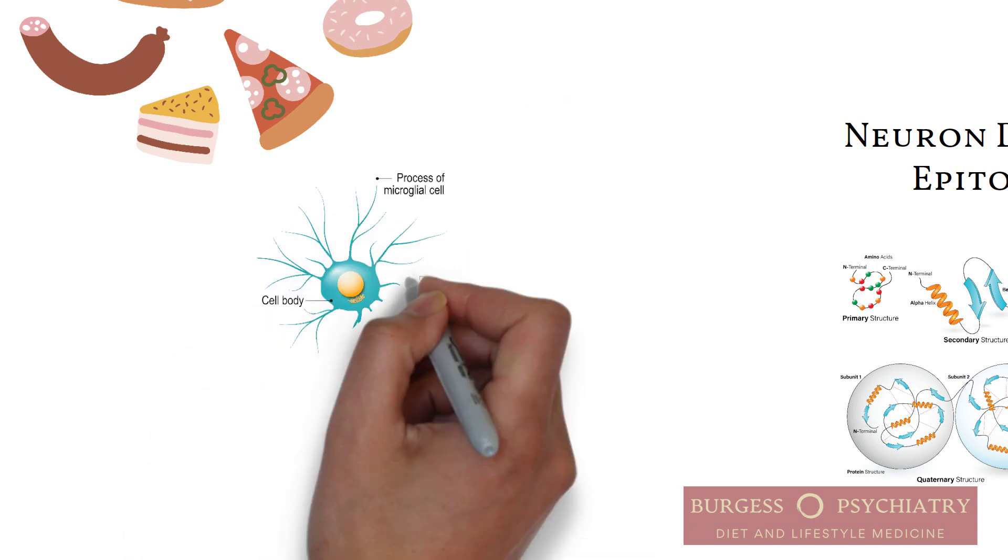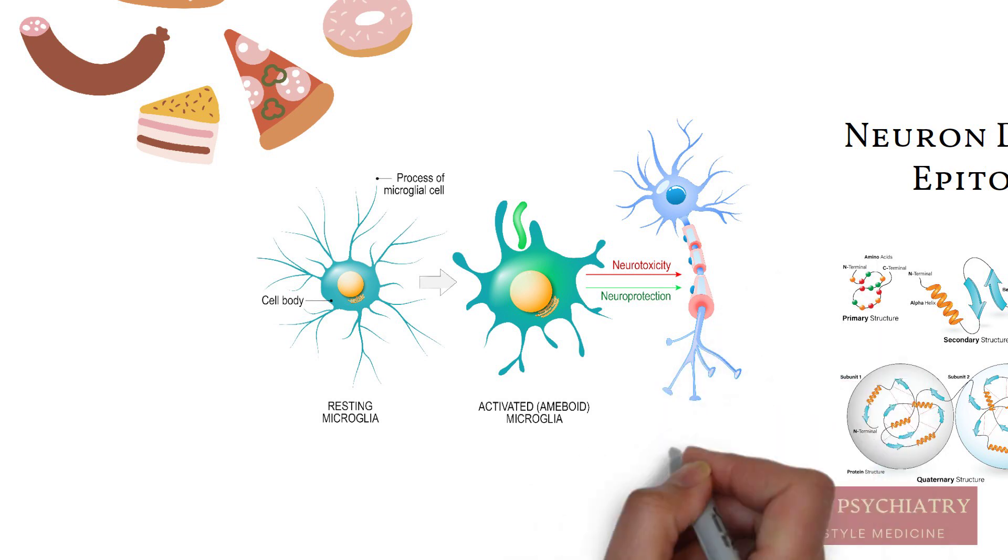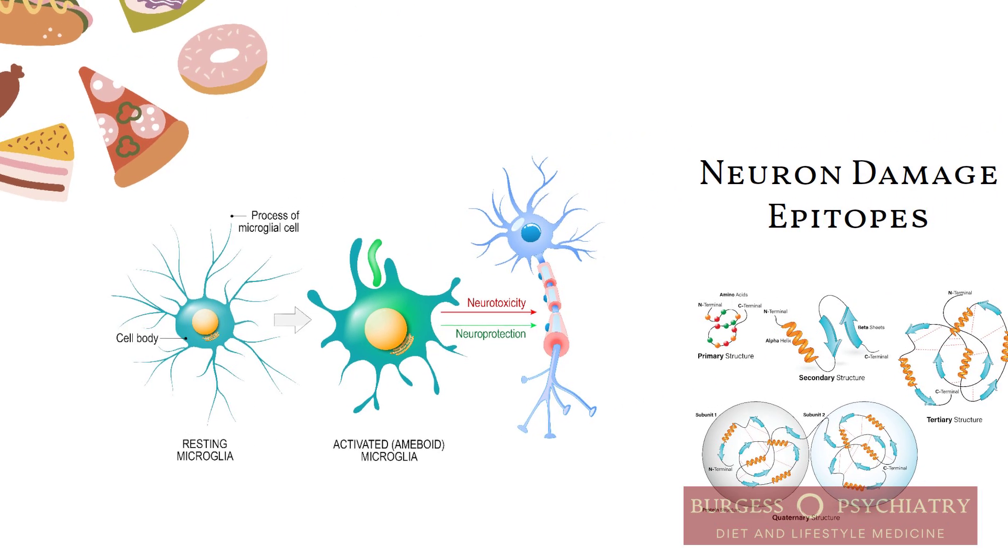Now, the neuron says to the protein, 'Wait a second. You've changed. I don't recognize you anymore. I need someone to look at you, such as a psychiatrist.' The neuron transports the protein up to the cell surface, and it shows it to the immune system.